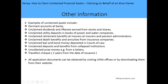Examples of unclaimed assets include: dormant bank accounts, unclaimed dividends and interest from stocks and shares, club and utility deposits in the books of power and water companies, unclaimed retirement benefits at insurance and pension administrators, unclaimed death benefits and annuities from insurance companies, unclaimed bail and bond money deposited in courts of law, unclaimed deposits and benefits from collapsed institutions, and unclaimed prize money and travelers checks more than two years from the date of issuance. All application documents can be obtained by visiting UFAA offices or downloading them from their website.